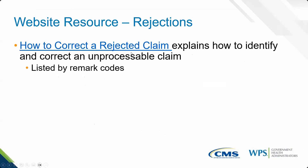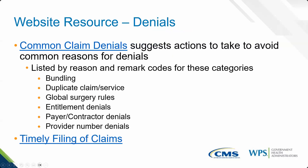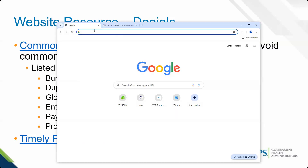For rejections, we have a resource on our website listing many remark codes — those CARCs and RARCs that explain why something rejected — and it tells you what you need to do to correct that rejected or unprocessable claim. Similarly, here's the common claim denial resource that lists by category — bundling, global surgery, entitlement, provider number denials, duplicate — and lists reason and remark codes, showing you what you need to do to either fix it or request your appeal.